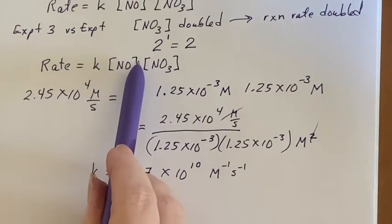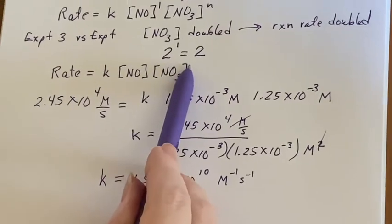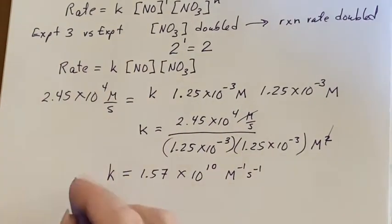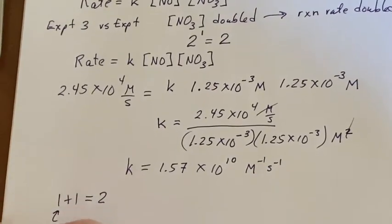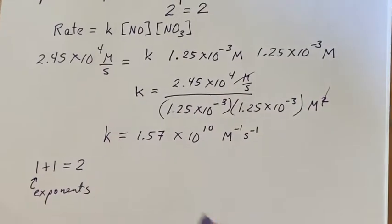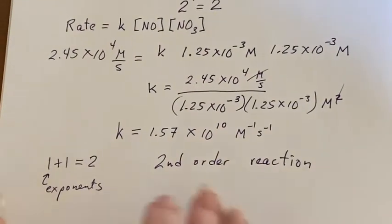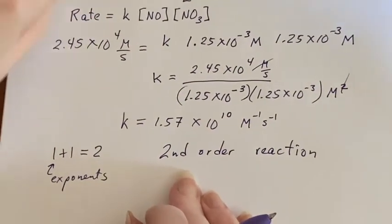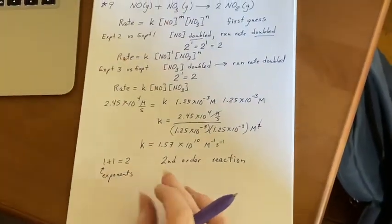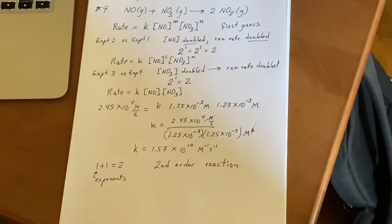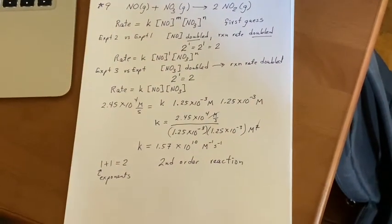This is a second order reaction because there was a virtual one here and a virtual one there. One plus one equals two - these are your exponents and your exponents added up to two. So this is a second order reaction. As it turns out in this particular case, that's what we might have expected because of there being one of these and one of these, but it's just a coincidence. That's the part that is hard to swallow - that it is just a coincidence.